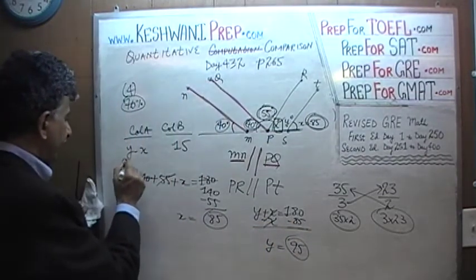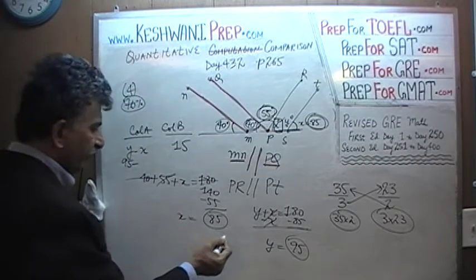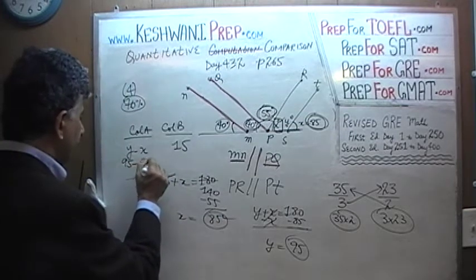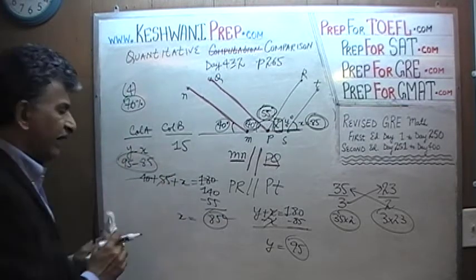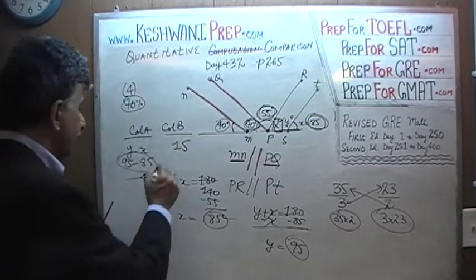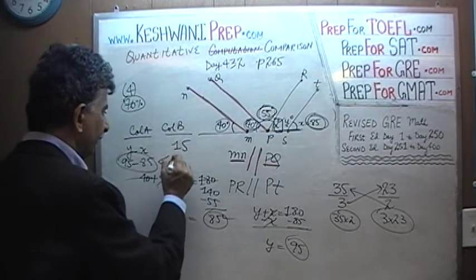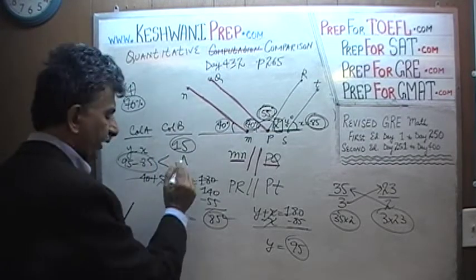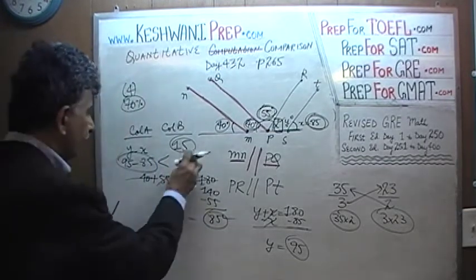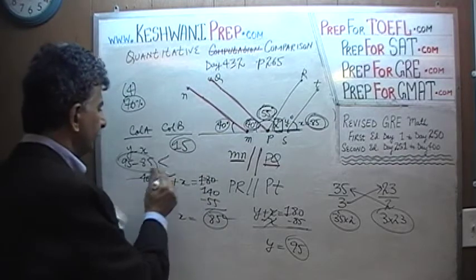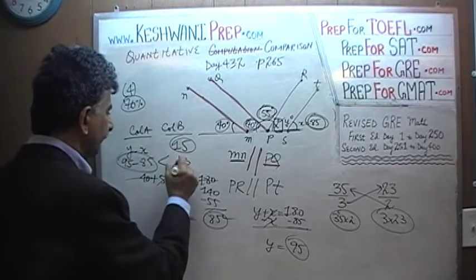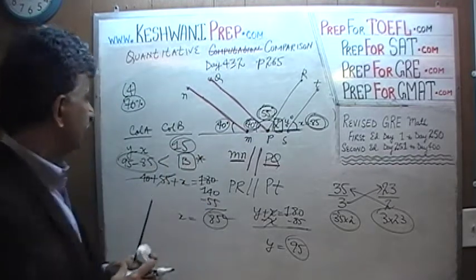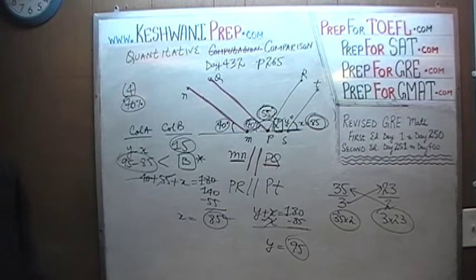Y is 95 and X is 85. Y minus X is 95 minus 85, which is 10 — and 10 is less than 15. The answer is B. Let's move on to number 5.